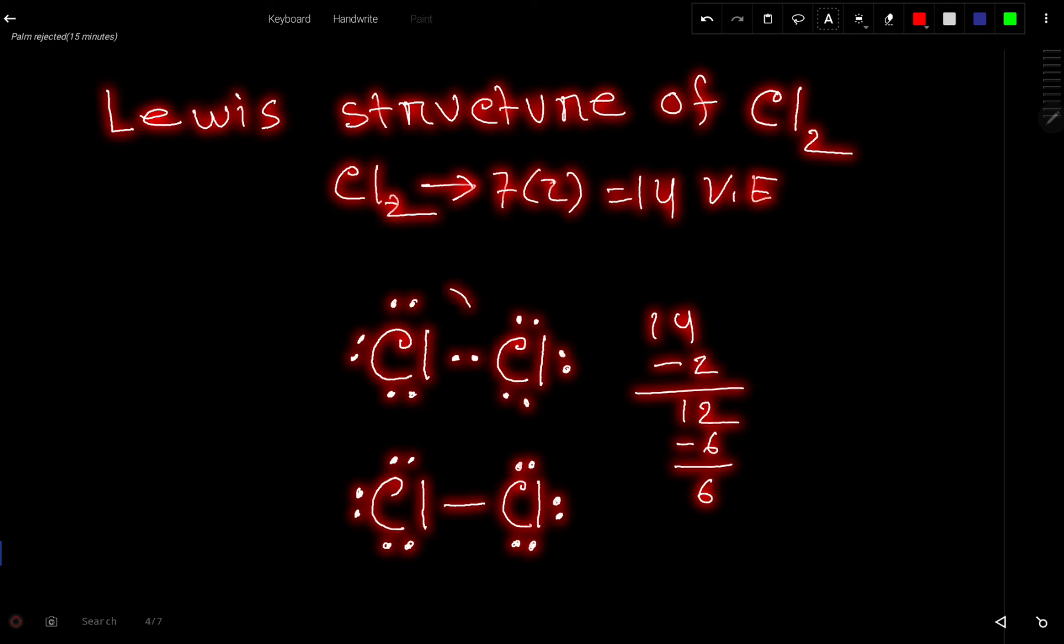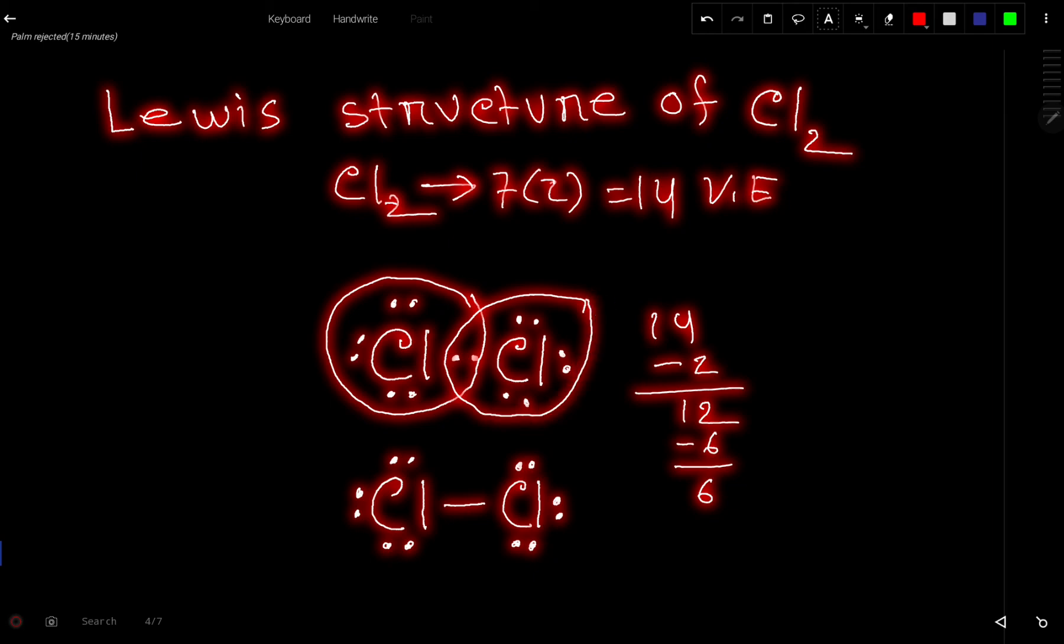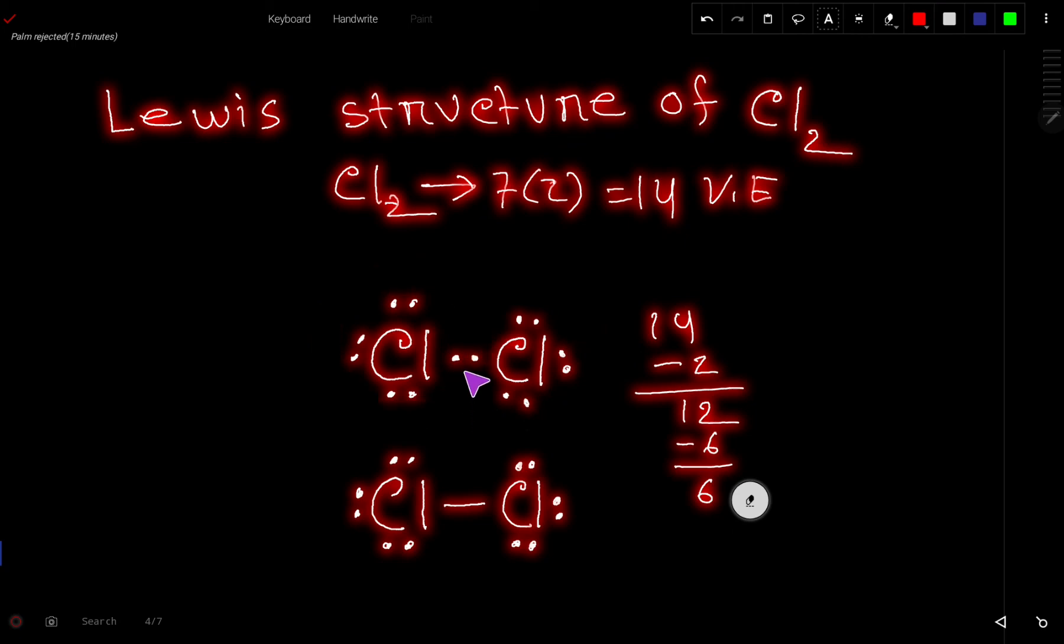Now both chlorine atoms have achieved octet, right? So this is the Lewis structure of Cl2. You can express this bond pair as a dash, right? So the Lewis structure of Cl2 is this or this.